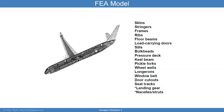It's going to have bulkheads, pressure deck, Q-beam, pickle forks, wheel wells, linger-ons, window belt, door cutouts, seat tracks, landing gear, and nacelles. All these different components of the finite element model need to be considered in the design.